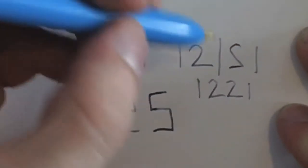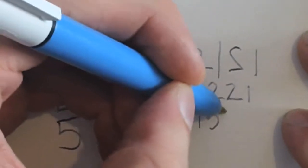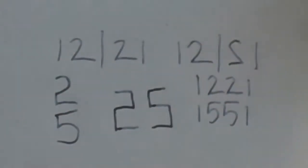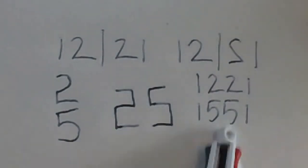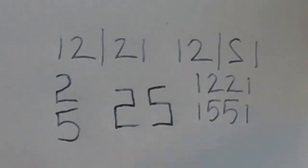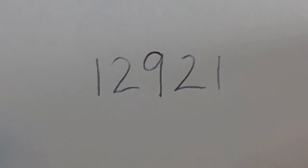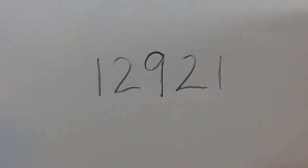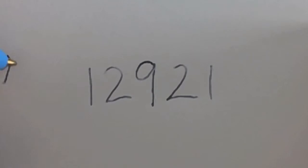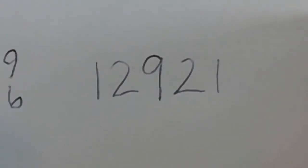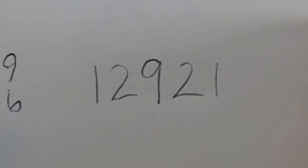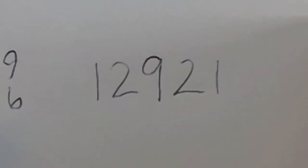I look at 12:21 and eventually I see 15:51 throughout the day — I like that. That also happened to be my neighbor's address when I was living with my grandparents. What's the difference between 12 and 21? It's 9. And while we're on the subject, 9 and 6 are like the same number — you can do a reflection there, flip these numbers upside down.